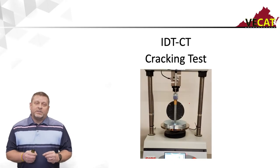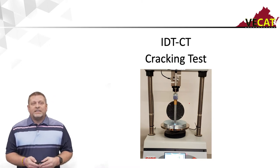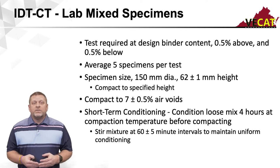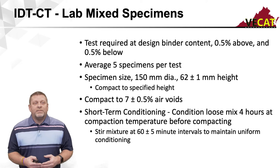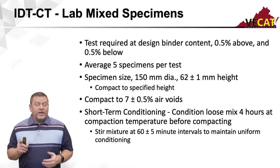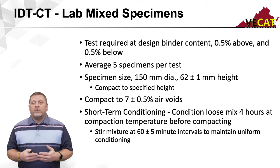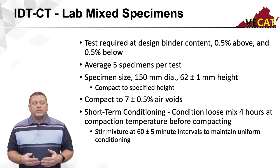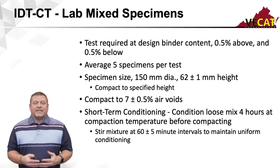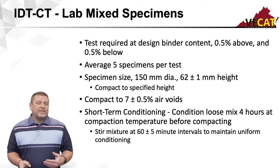Now let's talk about the IDT-CT, which is the crack test that Virginia has elected to use for BMD testing. The test requires a minimum of five specimens per test — you average them to get one CT index value to report. During the design process, we're required to provide a CT index result at design binder content, at 0.5% above, and at 0.5% below. That's a minimum of 15 specimens. When making these, you might want to make a few extras — I would recommend doing seven specimens at each asphalt content.